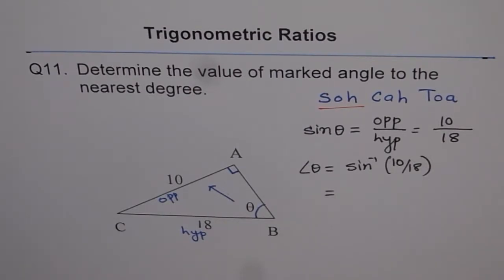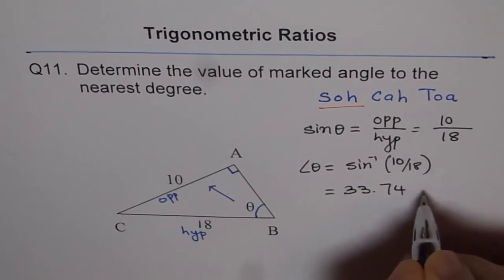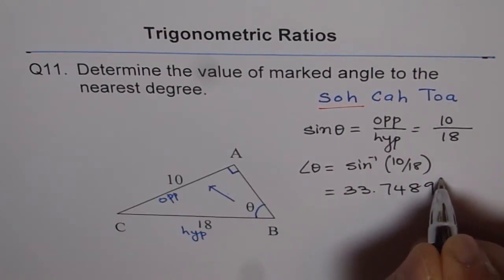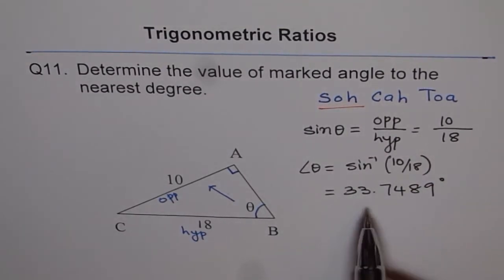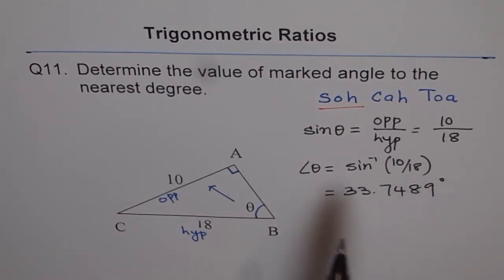You should put these values in brackets, 10 divided by 18. Otherwise you will get the wrong answer. You get 33.7489. It is recommended to write first your answer in four decimal places. Always in this trigonometry, you have to write first four decimal places as your answer.